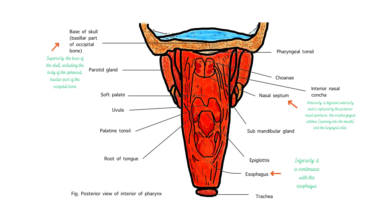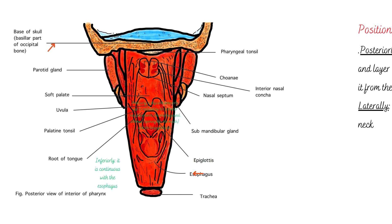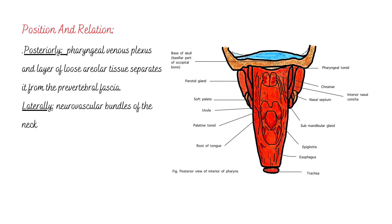Now we will discuss the position and relations of the pharynx, and we can see the arrows on the selected areas. Superiorly, the base of skull includes the body of the sphenoid and basilar part of the occipital bone. Anteriorly, it is deficient and is replaced by the posterior nasal apertures, oropharyngeal isthmus, and laryngeal inlet. Inferiorly, it continues with the esophagus. Posteriorly, pharyngeal venous plexuses and a layer of loose areolar tissue separate it from the prevertebral fascia. Laterally, it attaches to the neurovascular bundles of the neck.